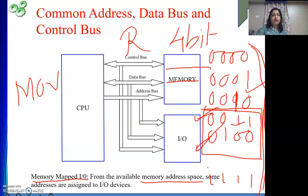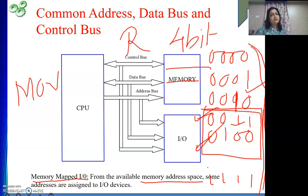To summarize: IO mapped IO and memory mapped IO are methods of assigning addresses to IO devices. In isolated IO, IO devices and memory have separate address spaces. In memory mapped IO, the IO devices share the same address space as memory - some addresses from the memory address space are assigned to IO devices.